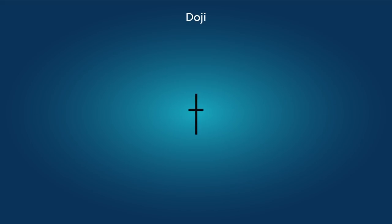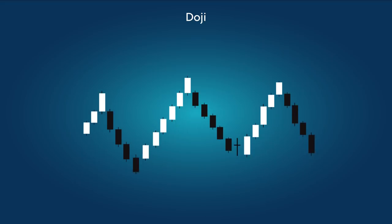Doji: a bullish pattern formed at the base of movement, when after several downtrending candles, a candle appears showing that the open and closing prices are identical. A Doji usually indicates possible pattern reversal.